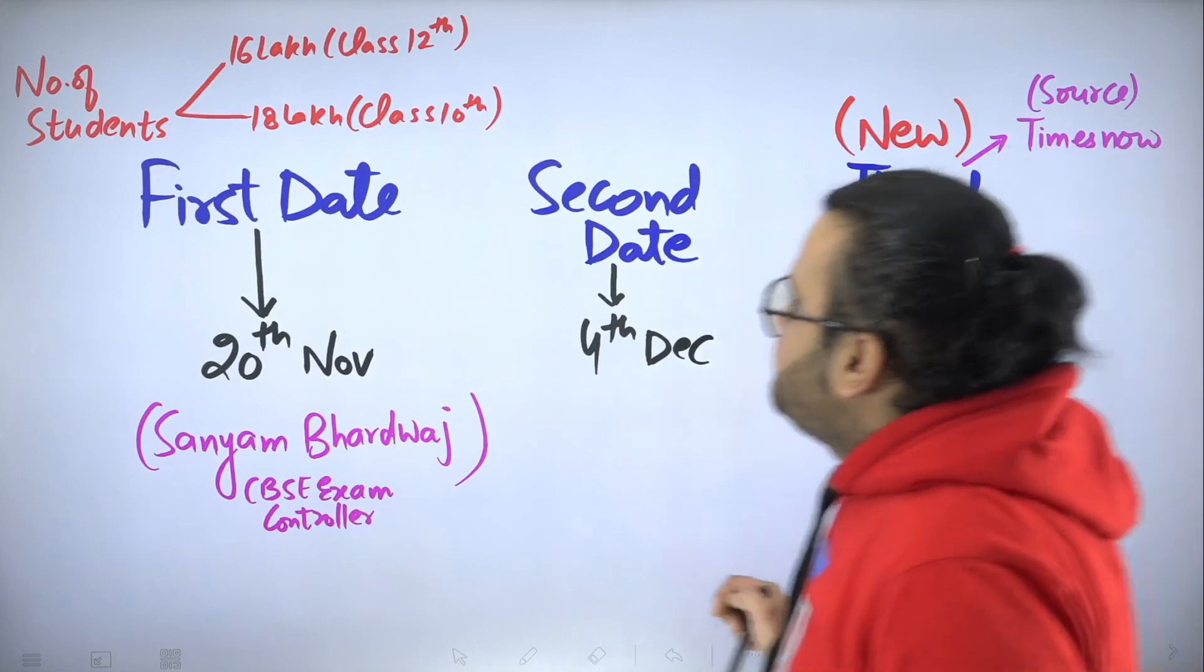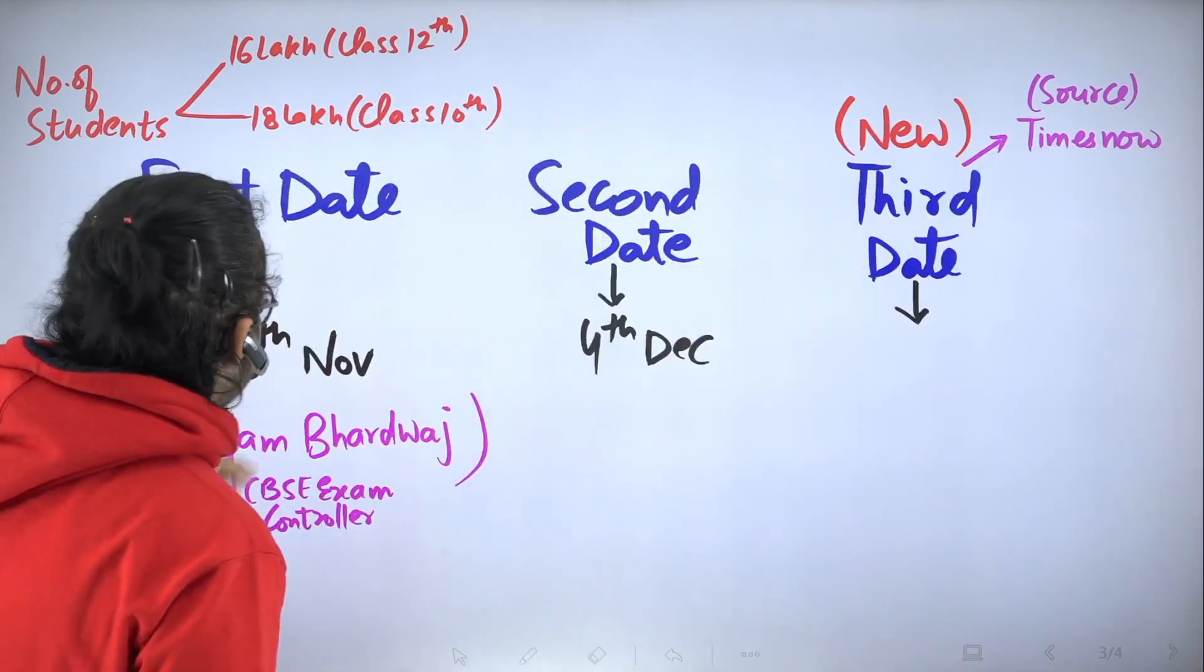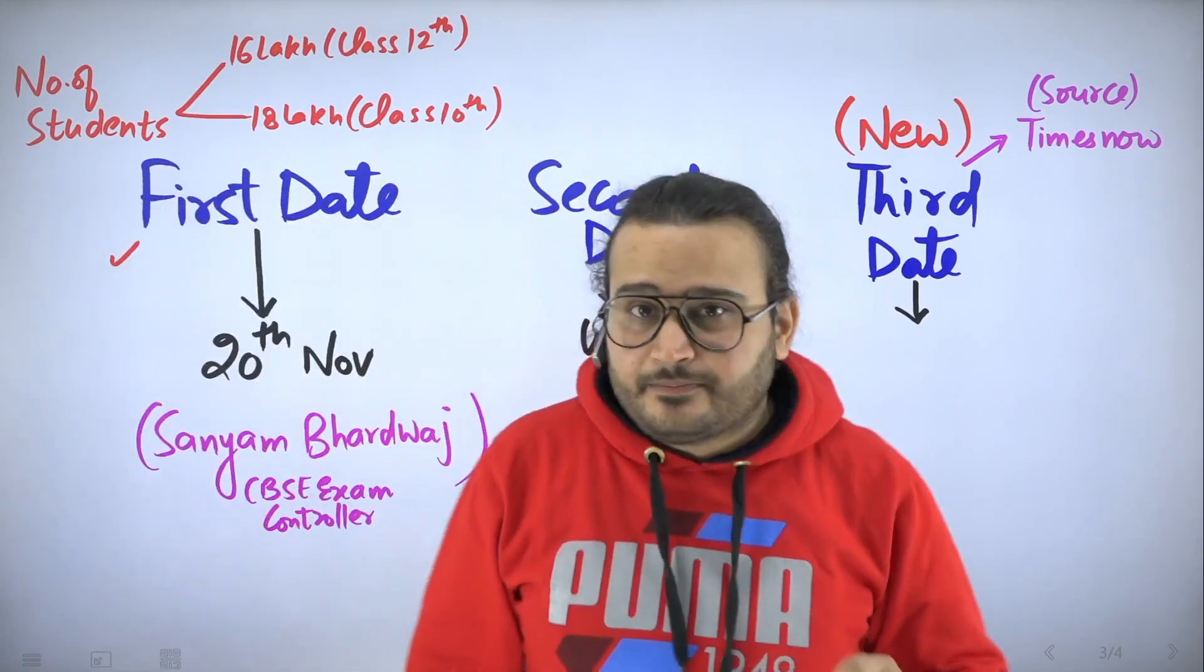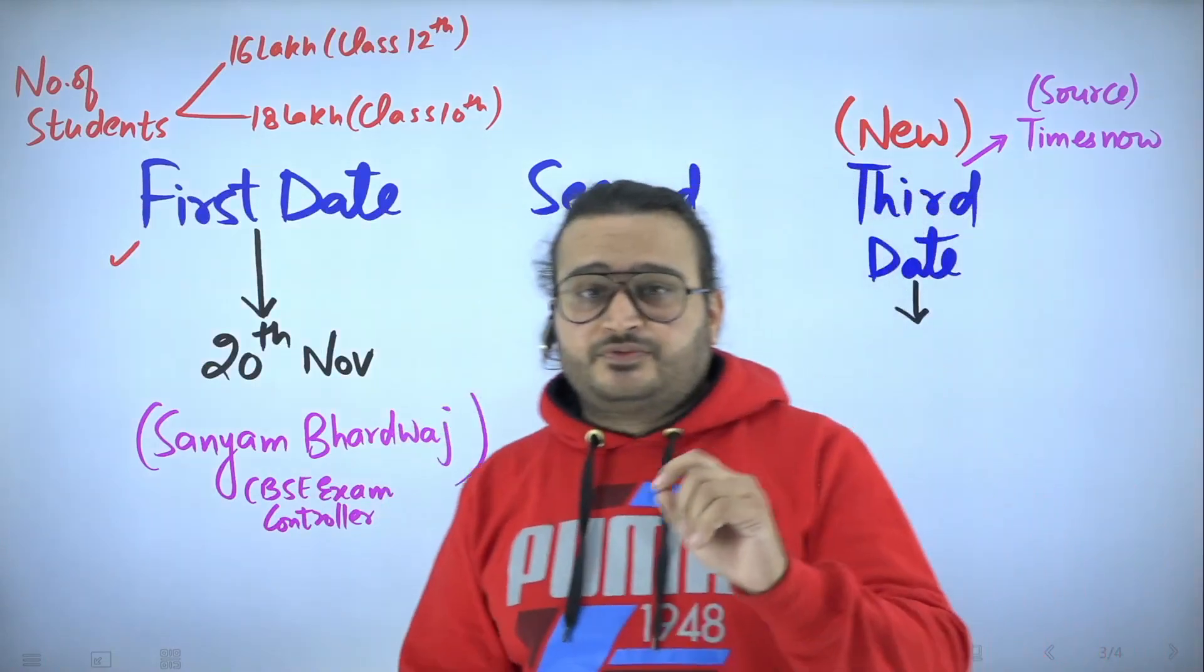These are some dates. The number of students is 16 million class 12th and 18 million class 10th. The first date that came out was 20 November 2022. But I have told you about it in the YouTube community.